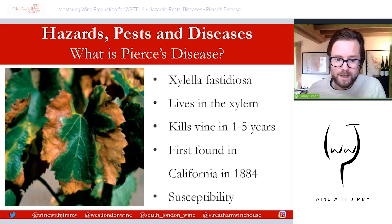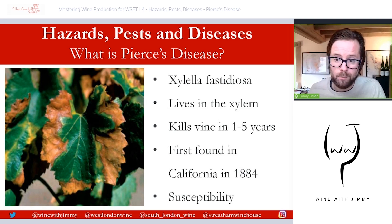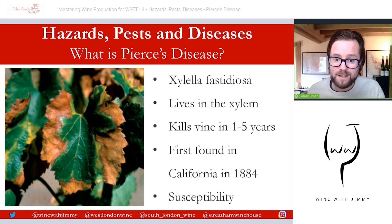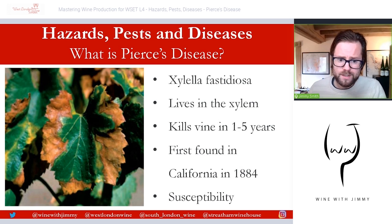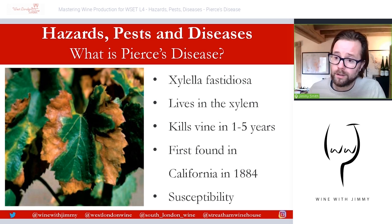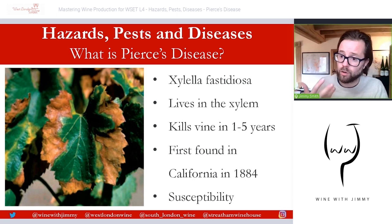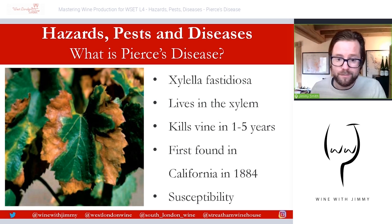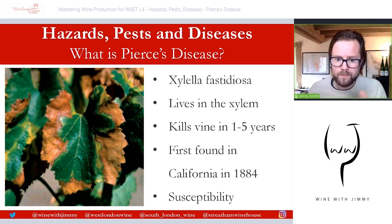Pierce's disease is a bacterial disease that quickly kills vines and is a big problem in North America. The disease is caused by a bacterium called Xylella fastidiosa — a gram-negative bacterium that survives and multiplies in the water-conducting elements of the plant, specifically the xylem. Living in the sap channels, the bacterium clogs them up.